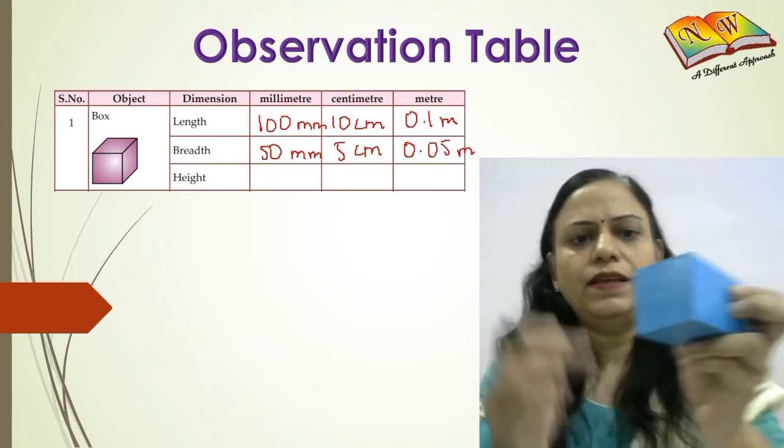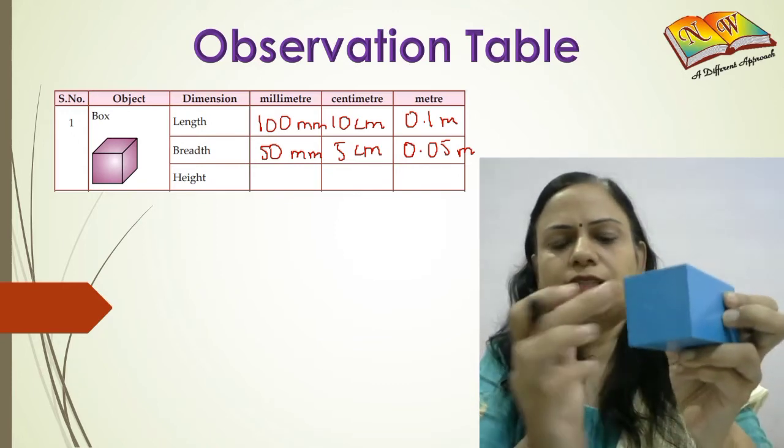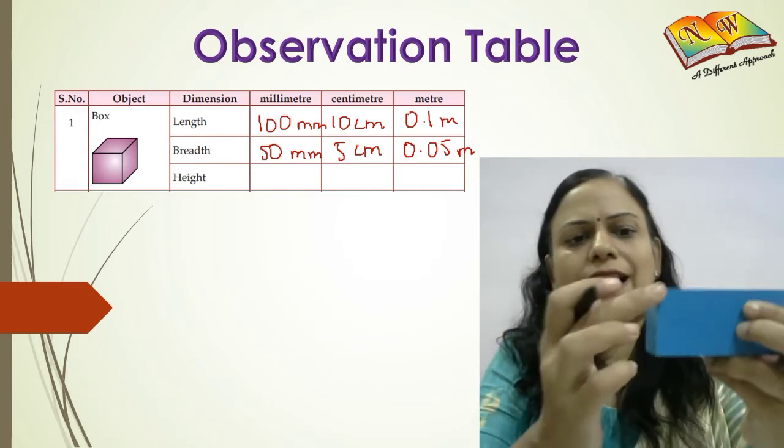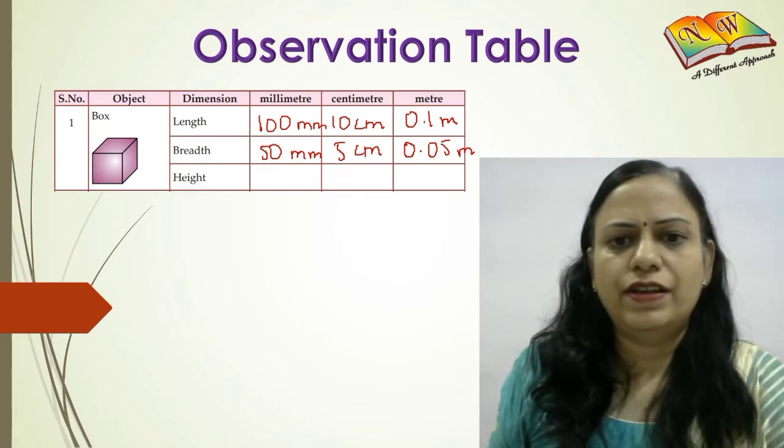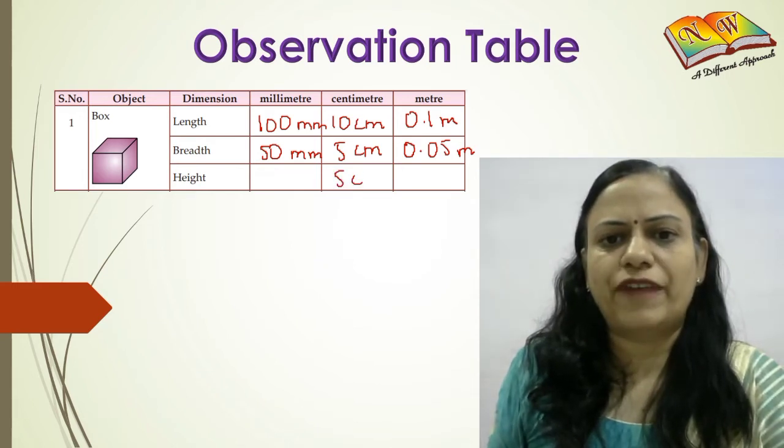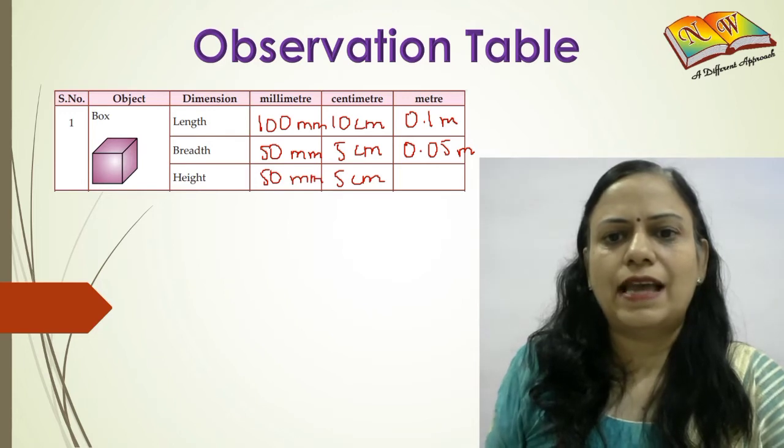...is also 5, that is why this side of this box is a square. So the breadth and the height both are 5, so this is also going to be 5 centimeters, making it 50 millimeters and 0.05 meters.